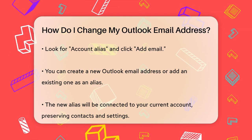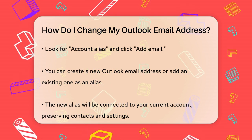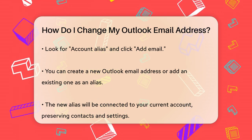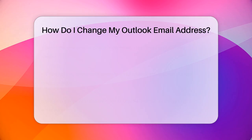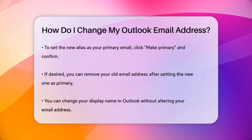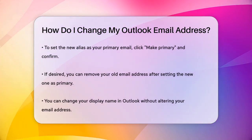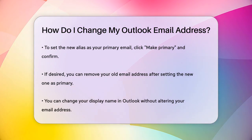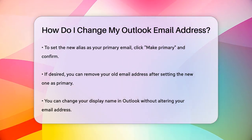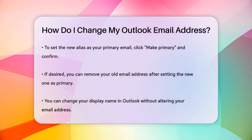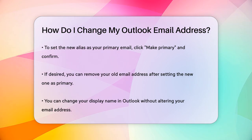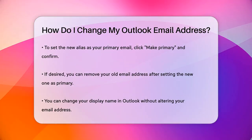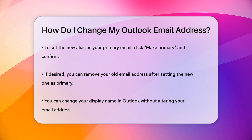After adding the new alias, you'll need to set it as your primary email address if you want to use it as the default for sending and receiving emails. To do this, click the Make Primary link next to your new alias and confirm by selecting Yes. If you want to remove your old email address, you can do so by clicking the Remove link next to it, but make sure your new alias is set as primary first.